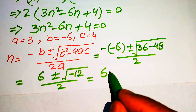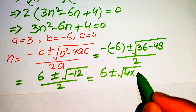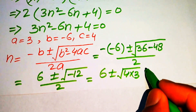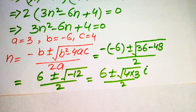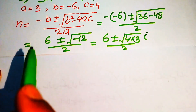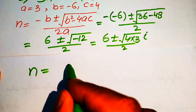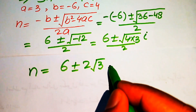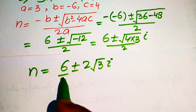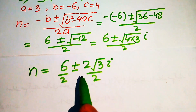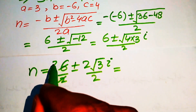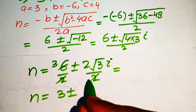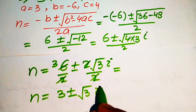We write minus 12 as 4 times 3. Since there is a negative sign inside the square root, it introduces iota. So we have 6 plus or minus square root of 4 times 3 times iota, divided by 2. The square root of 4 becomes 2, giving 6 plus or minus 2 times square root of 3 times iota, divided by 2. Separating the fraction, the 2s cancel and we get n equals 3 plus or minus square root of 3 times iota.